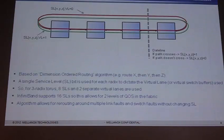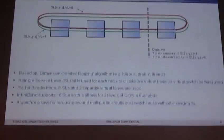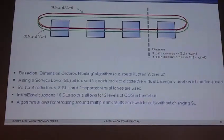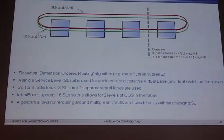The algorithm also allows for rerouting around multiple link faults and switch faults without changing the SL. That's very important because it's the application that picks the SL. When I'm going from one node to another, I need to find out what SL to use. Once my application, like MPI, starts using that SL, I don't want to change it. If a link gets pulled, I want to keep the same SL — I don't want the application to die and MPI to have to restart.